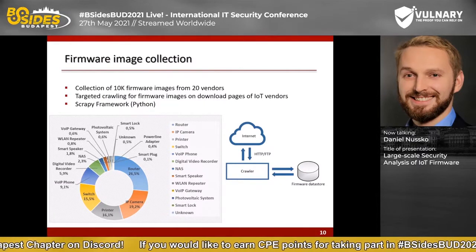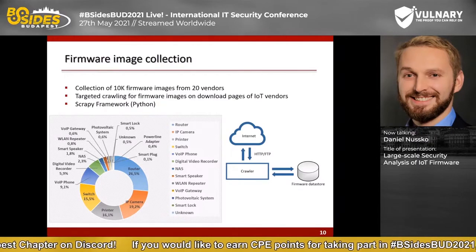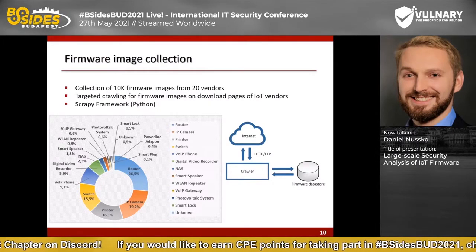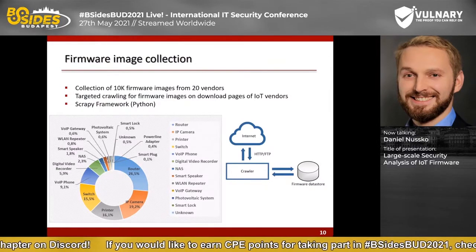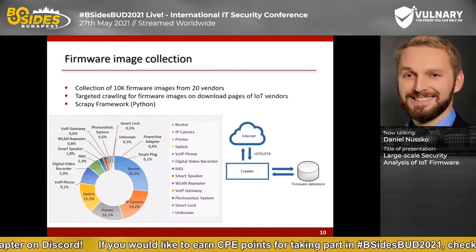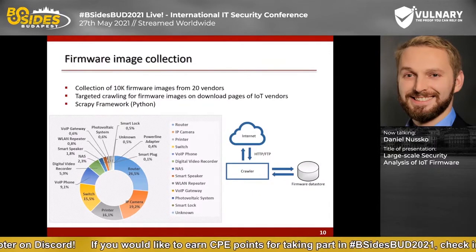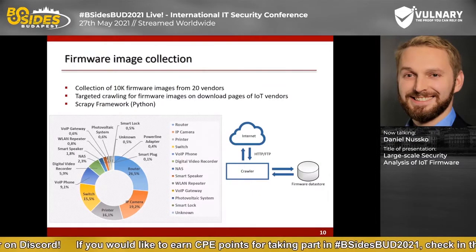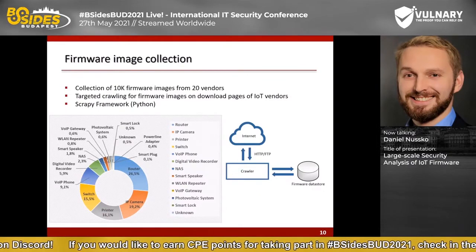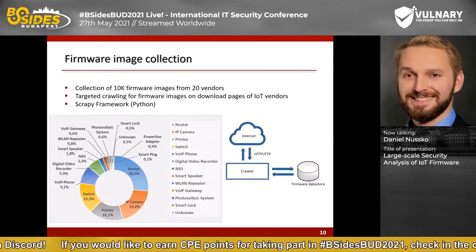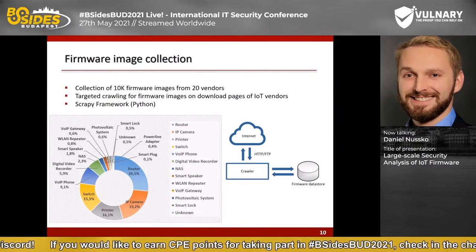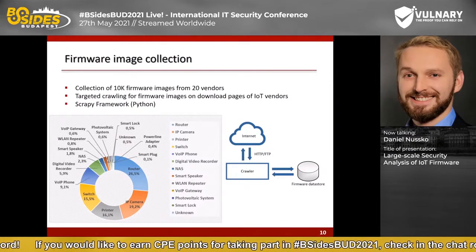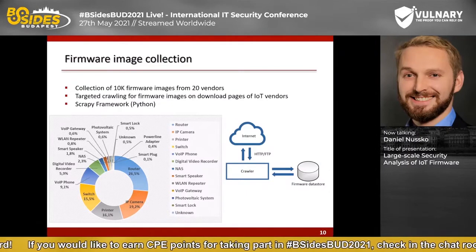As shown in the pie chart, most of the firmware files are for routers, followed by security cameras, printers, switches, and VoIP phones. A smaller number of images are for NAS systems, smart speakers, Wi-Fi repeaters, VoIP gateways, photovoltaic systems, smart locks, smart plugs, and power line adapters. A wide range of device types was analyzed.